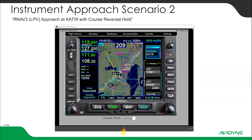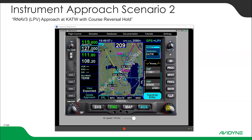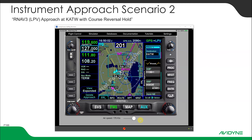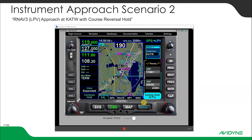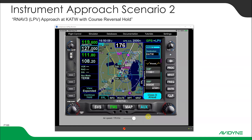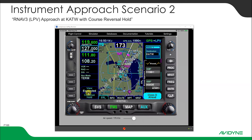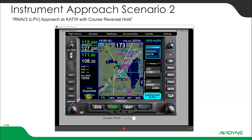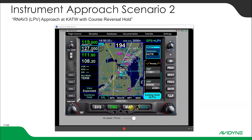We're coming up on Apixi. It's a teardrop entry into that course reversal. Now notice it's telling us we're going to exit the hold at the fix, because this isn't actually a hold — it's just a course reversal. If ATC came on and told us to hold, we could push the button in and push line select key number one to stay in the hold. Otherwise, the FMS knows we're going to exit at the fix.